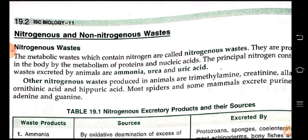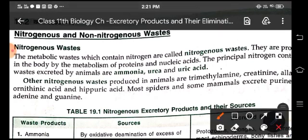Now come to nitrogenous and non-nitrogenous waste. The metabolic waste which contains nitrogen are called nitrogenous waste, like ammonia, urea and uric acid, and other nitrogenous waste like trimethylamine, protein-ion, allantoinic acid and hippuric acid. Usually spiders and mammals excrete purines, adenine and guanine.